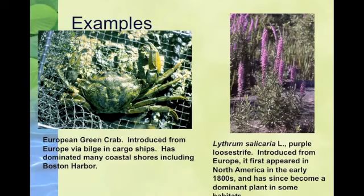When crabs are little babies, they are known as plankton — tiny organisms that move with the water. So when ships in Europe would take on water to make their way across the Atlantic, and then when they'd get to, say, a Boston port, they would unload that water.